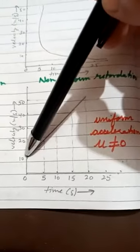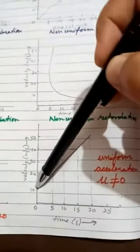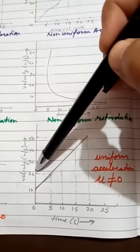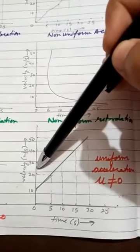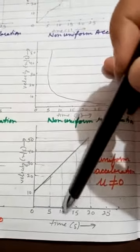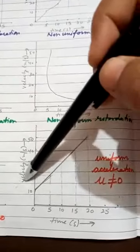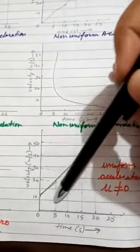The last graph is for uniform acceleration when the initial velocity u is not zero. Here the body is already moving at 10 m/s — the initial velocity is not zero — and it continues to accelerate uniformly. So this is a straight line graph for uniform acceleration, but it does not start from the origin because the initial velocity is not zero.